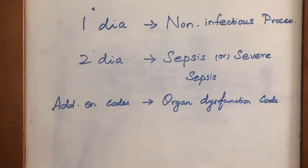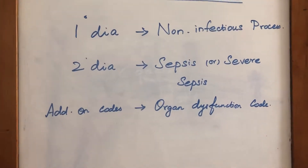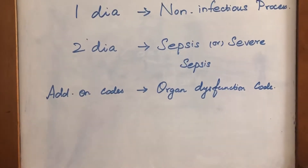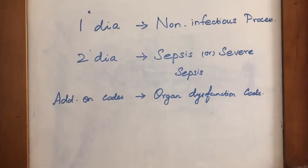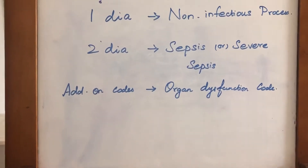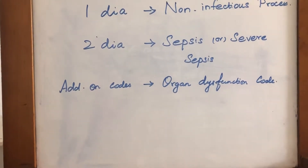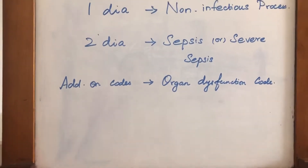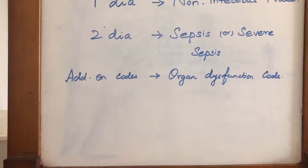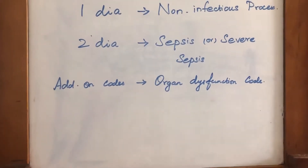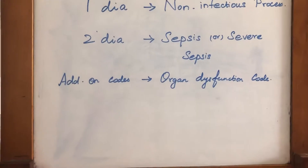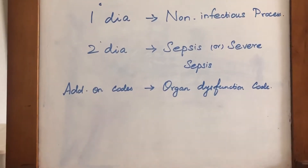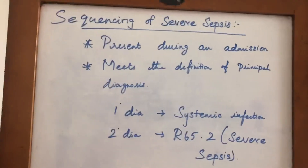These are non-infectious processes — meaning Sepsis that does not arise from infection. So this is the non-infectious process. In this case, the principal diagnosis is the non-infectious process. The secondary diagnosis is Sepsis or Severe Sepsis. If there is any organ dysfunction, add-on codes for organ dysfunction must also be assigned.